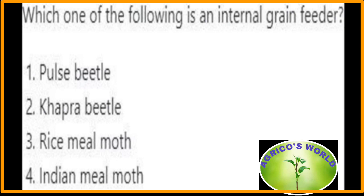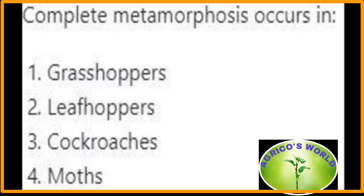Which one of the following is an internal grain feeder? The khapra beetle, Trogoderma granarium, is an internal grain feeder. Complete metamorphosis occurs in moths.